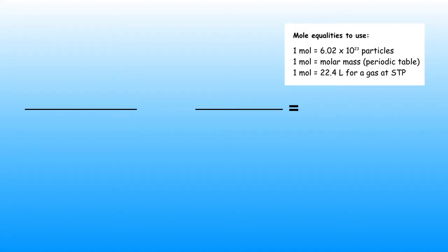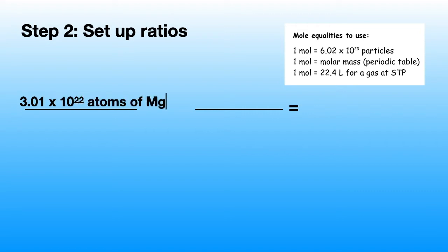Step 2 is setting up molar ratios. What we want to start with is what is given. What's given is 3.01 times 10 to the 22nd atoms of magnesium divided by 1. We don't use 1 in the real world, but for the purpose of this video I will place the 1 underneath.